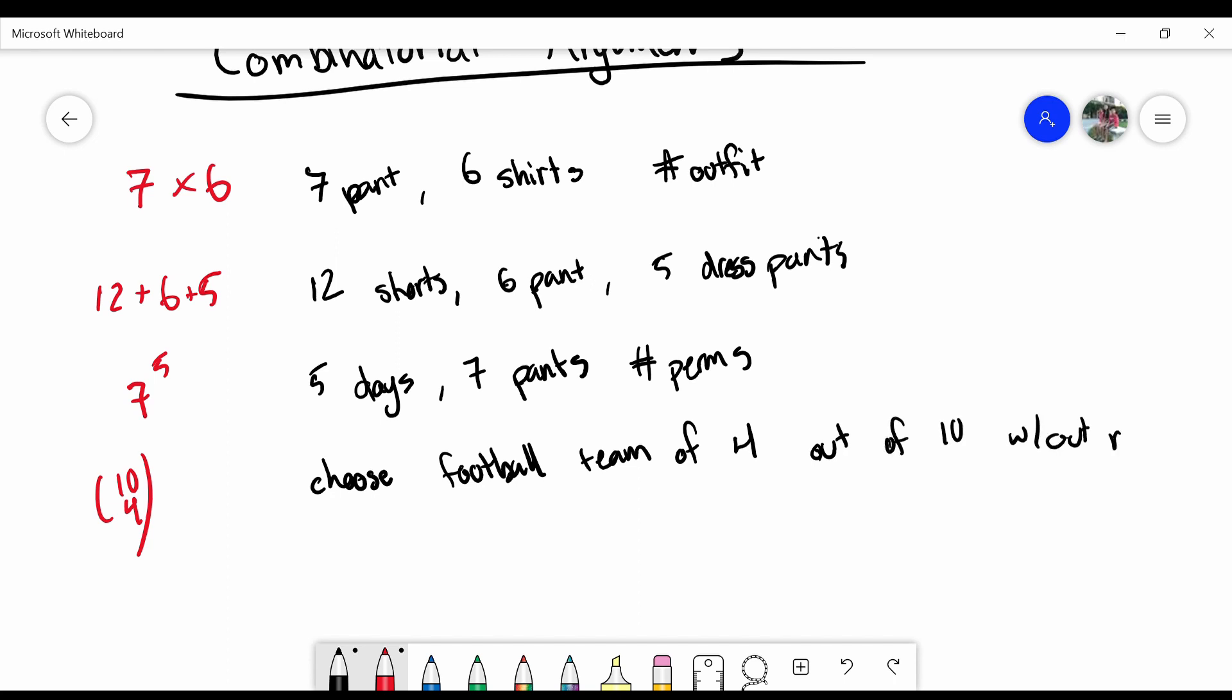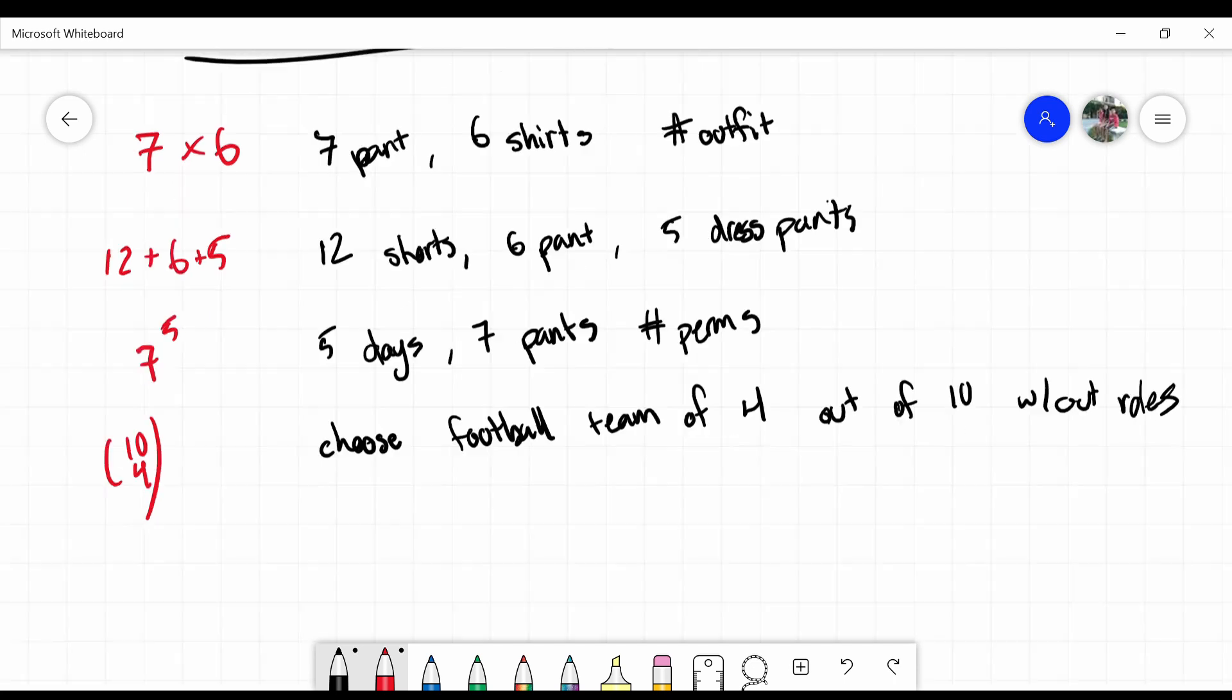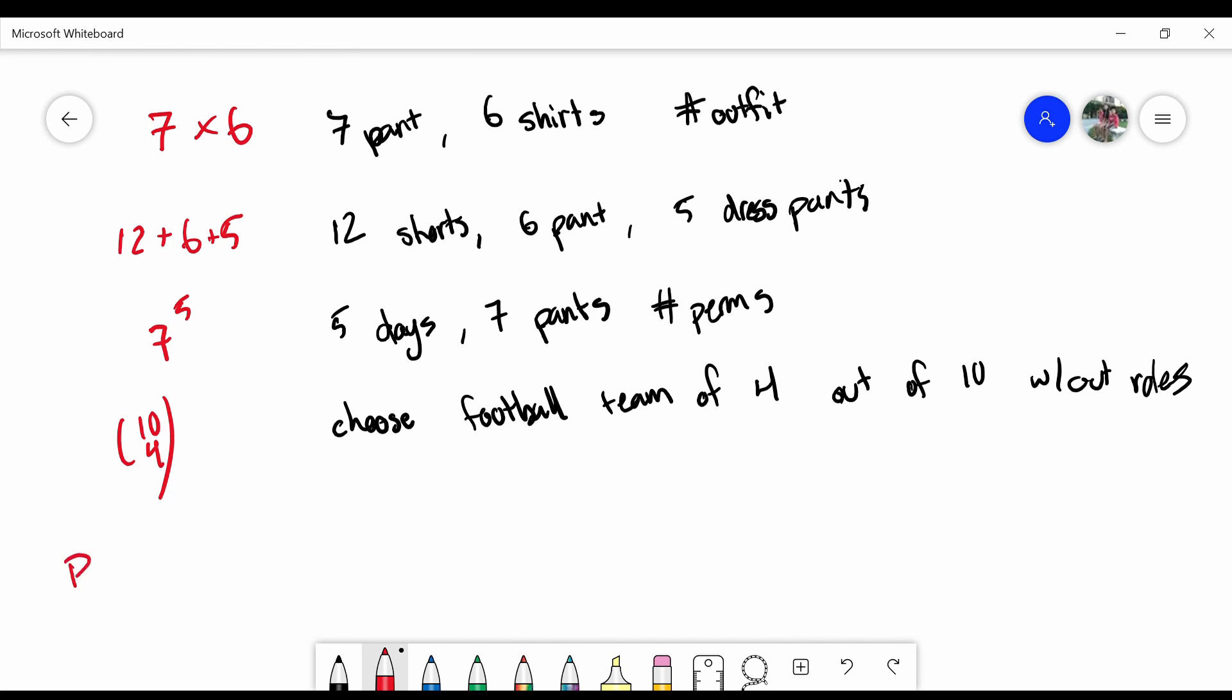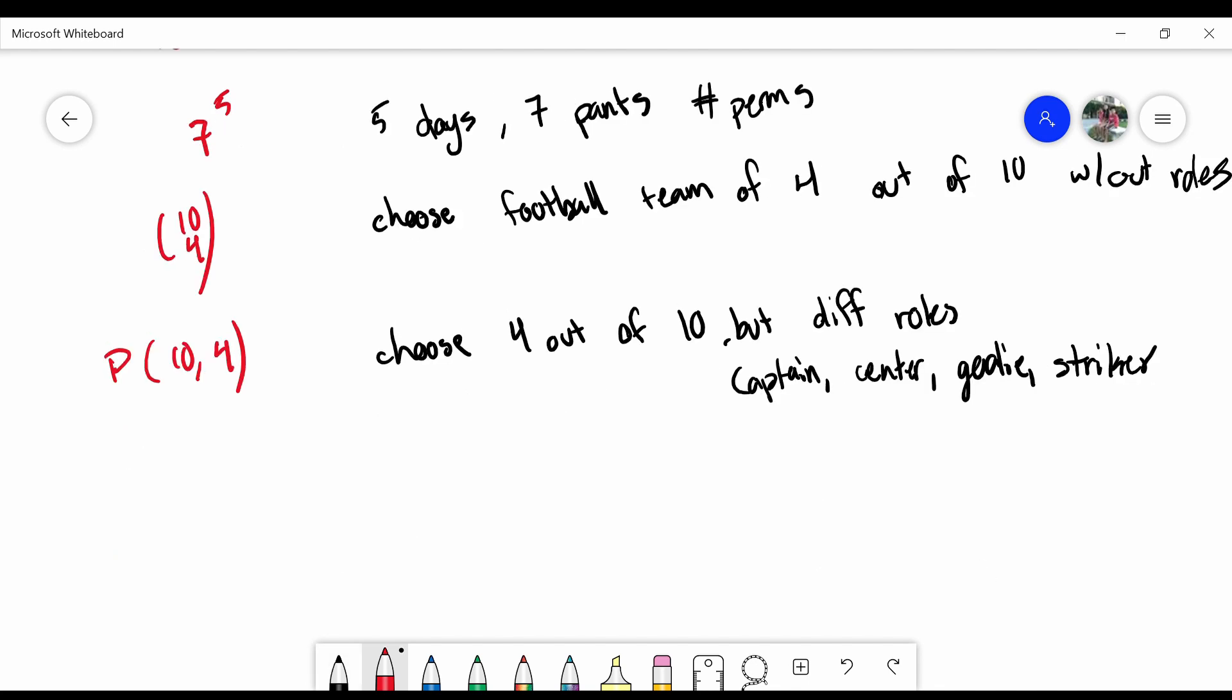These are just random people, and each of them have the same role, and so now let's 10 choose 4. What about the permutation of 10 and 4? So you're choosing 4 players out of a 10 team, but they each have a separate role. Maybe a captain, a center, a goalie, and a striker. If I had 5 times 13 choose 5, in this case, because of this 13 choose 5, you're still choosing 5 out of 13 people, but assign one of them the role of a captain.